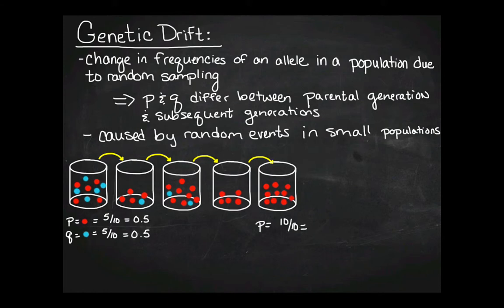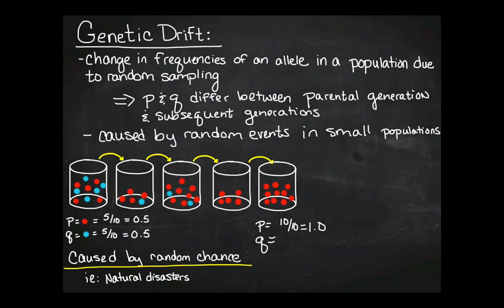And so what you're seeing there is you're just seeing a change in the frequency due to random probability. And this is typically going to be associated with things like natural disasters. If there's a fire and it burns off part of an ecosystem and it just coincidentally happens that most of a phenotype was present in that part of the ecosystem when it burned, then you're going to have a skewed allele frequency in the subsequent generations from what you would expect in Hardy-Weinberg.